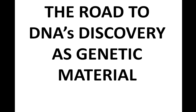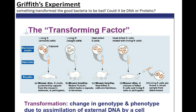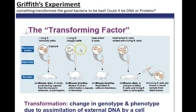We started the quarter with the road to discovery for DNA being the genetic material that codes for new living things. One of the experiments we talked about was Griffith's experiment. Griffith was trying to figure out what was transforming bacteria. We had three control groups and one experimental group. You inject the mouse with the smooth cells that cause disease, the mouse dies — no surprise.